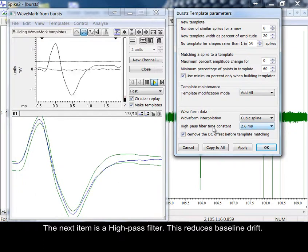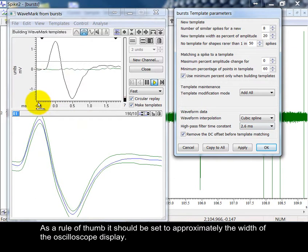The next item is a high pass filter. This reduces baseline drift. As a rule of thumb, it should be set to approximately the width of the oscilloscope display.